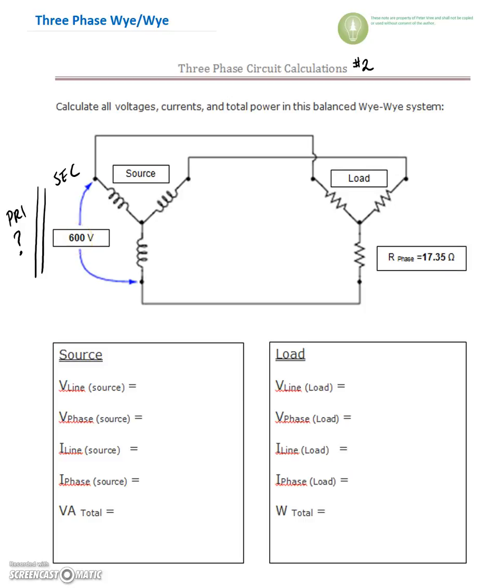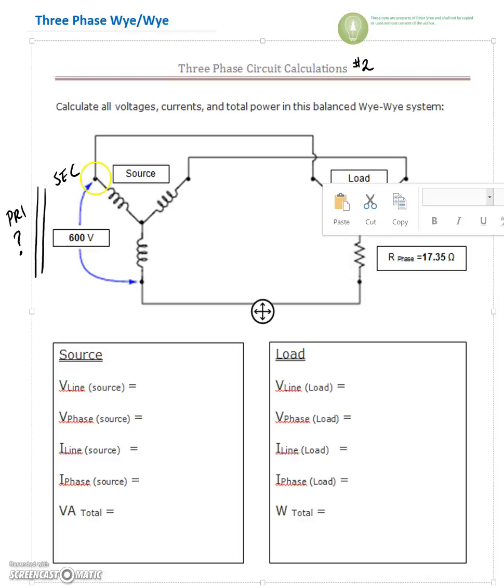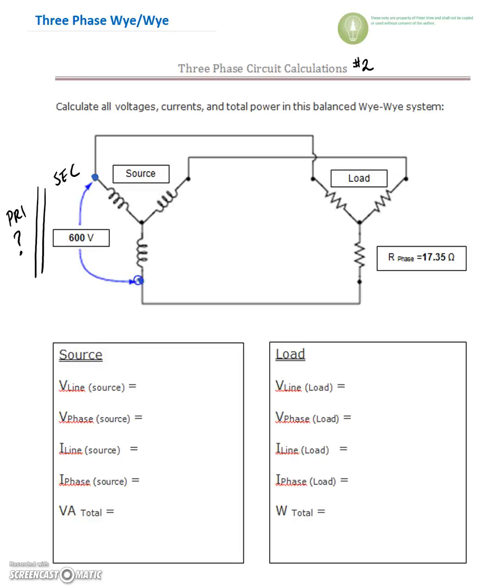So this voltage right here, let's do our voltages first. This voltage right here is from this outside terminal to this outside terminal. So that voltage that's been given is our line voltage.